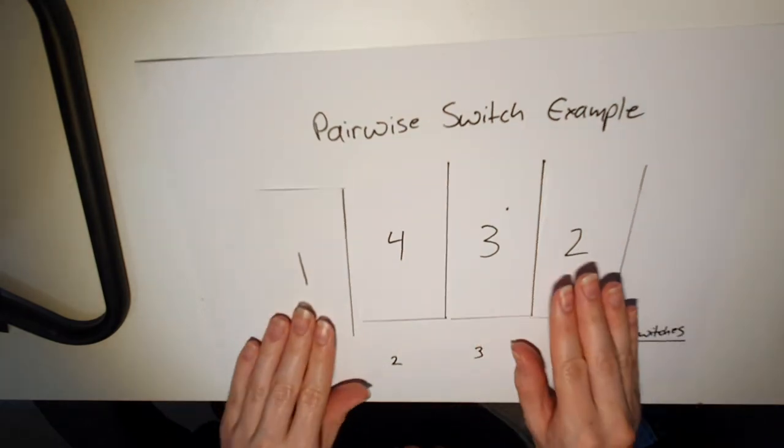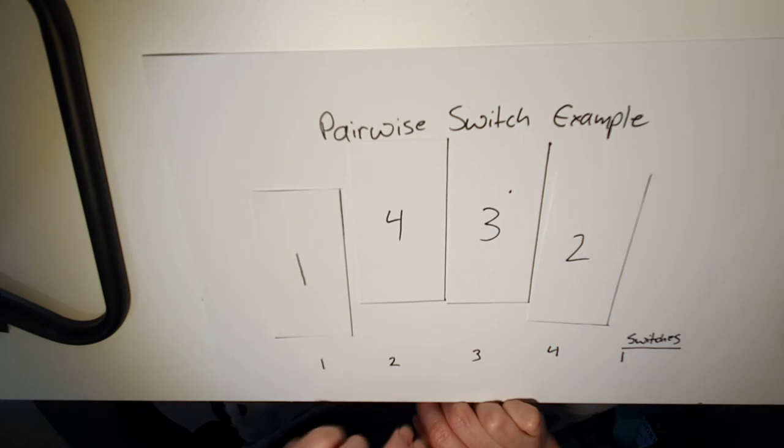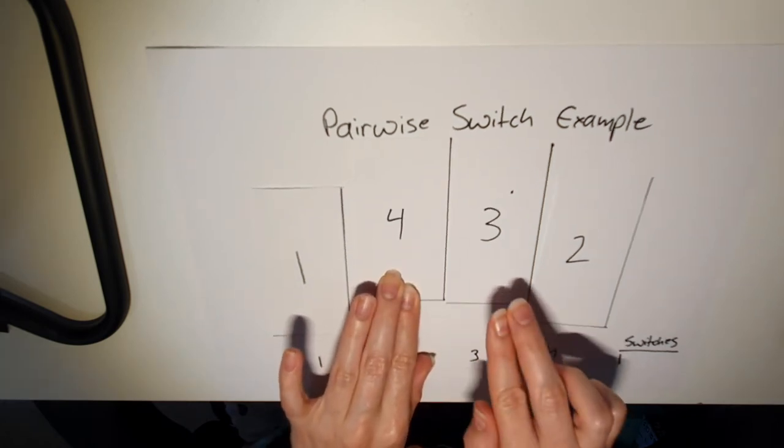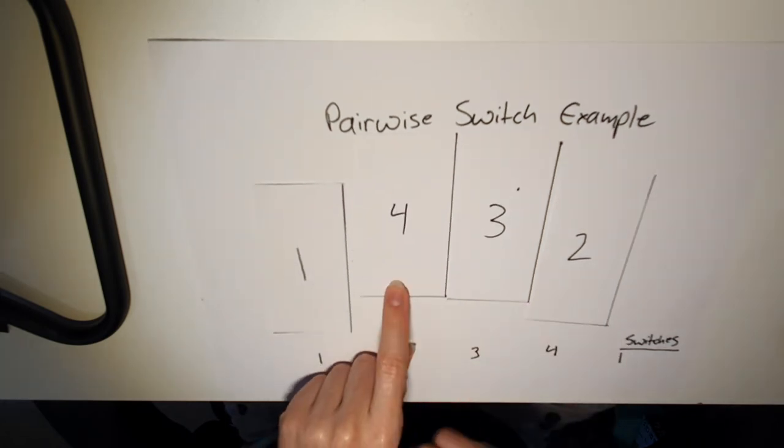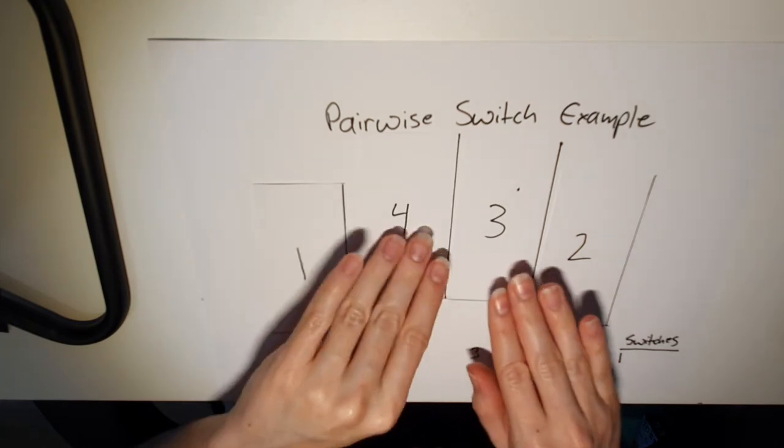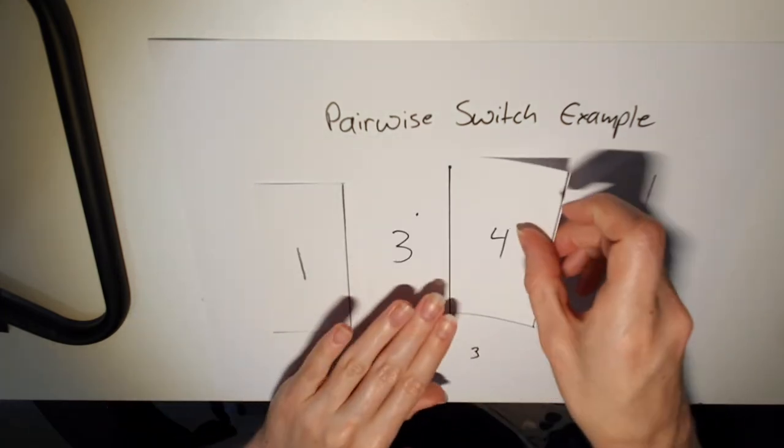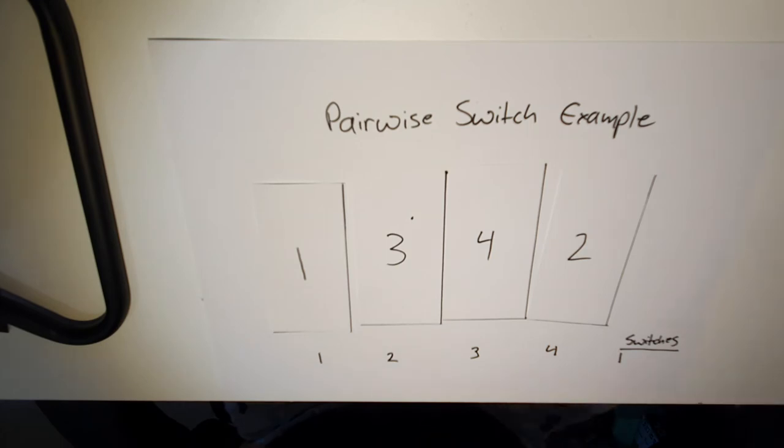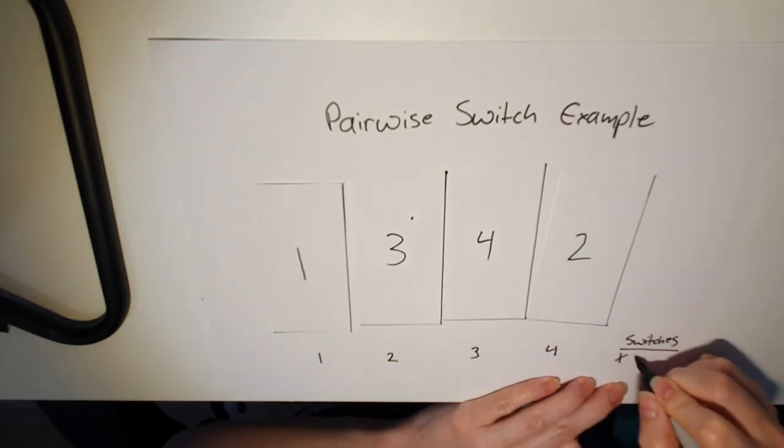Then we check the next pair. Is the left less than the right? Is four less than three? It's not. So we need to make a switch. Now we've made two switches.